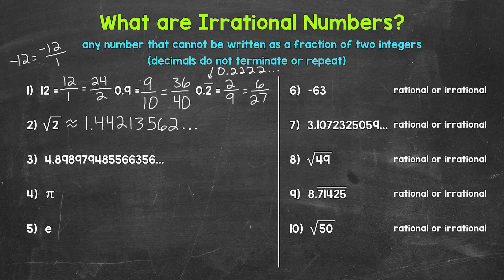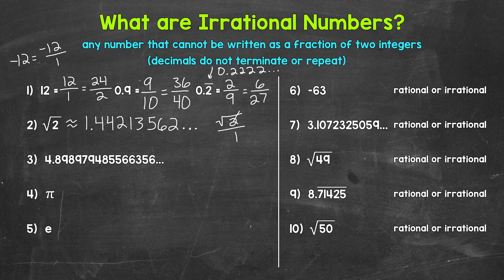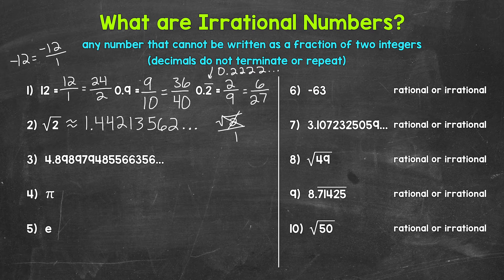There's no way to write this as a fraction of two integers. You may be thinking, let's just write it as the square root of 2 over 1 — yes, it is a fraction, but it has to be a fraction of two integers. The square root of 2 is not an integer. So we cannot write the square root of 2 as a fraction of two integers. This is actually going to be the case for taking the square root of anything that is not a perfect square — the square root of any non-perfect square is irrational.